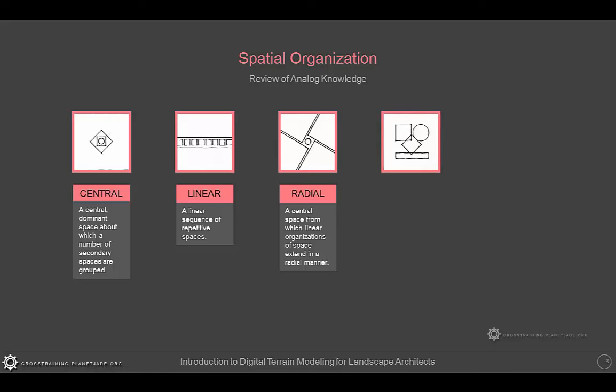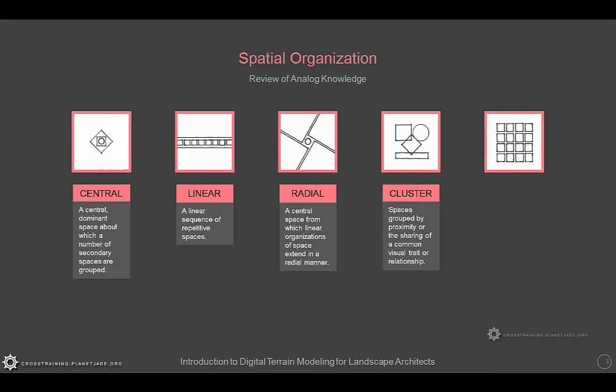The next one is called Cluster, defined as spaces grouped by proximity or the sharing of a common visual trait or relationship. And then the last one is called the Grid, which involves spaces organized within the field of a structural grid or three-dimensional framework. All of these images, definitions, and terms come from the textbook Architecture, Form, Space, and Order — specifically from the second edition, page 189.